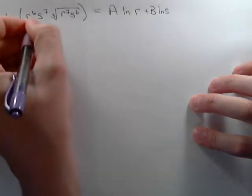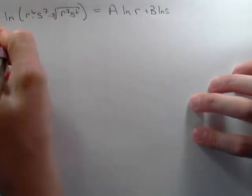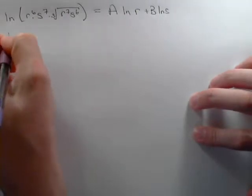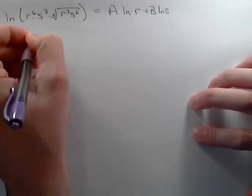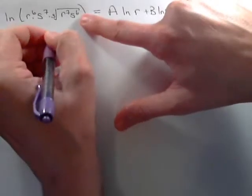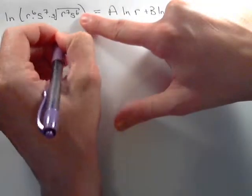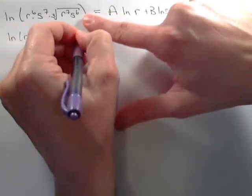First of all, we have a product and a product here, so that can be separated into addition of logs. So it's the natural log of r to the 6th plus the natural log of s to the 7th plus